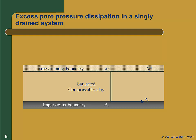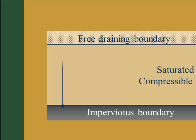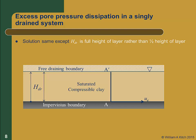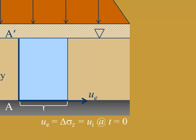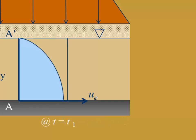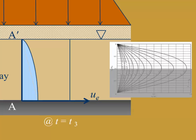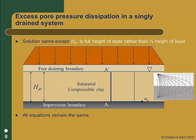Let's look at one more case before we conclude — a singly drained compressible layer. On the bottom, it's underlain by an impervious material, perhaps a dense shale, and on the top it's overlain by a freely draining sand. The longest path that any water molecule has to travel to exit the clay layer is now the full height of the clay layer. The solution to this problem is exactly the same as the doubly-drained case, except that h_dr is now the full height of the clay layer rather than one-half. The isochrones for this case are the same as those in figure 11.4, except we need to consider just the upper half of the figure. All the equations are the same — we just have to use the correct h_dr in our calculations.